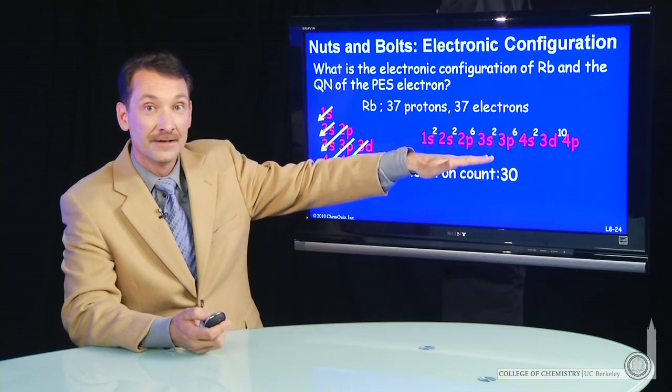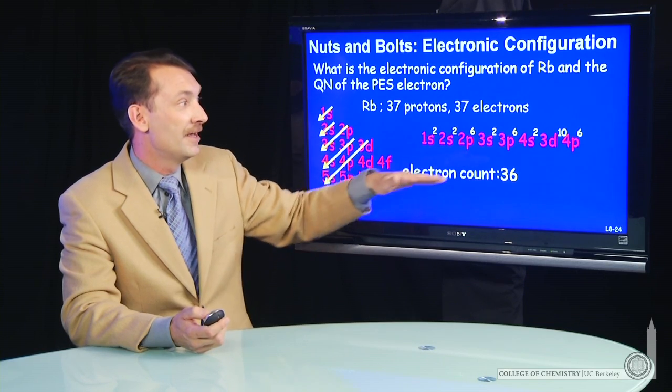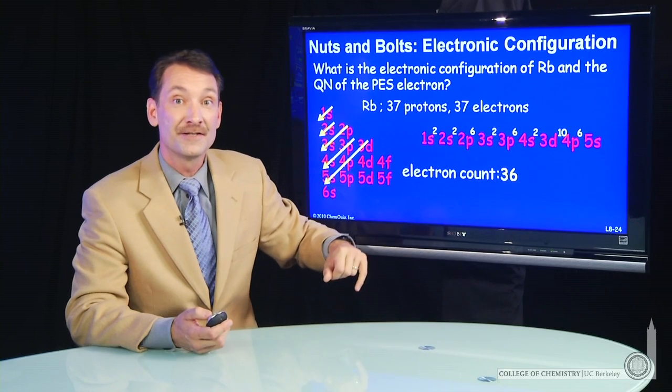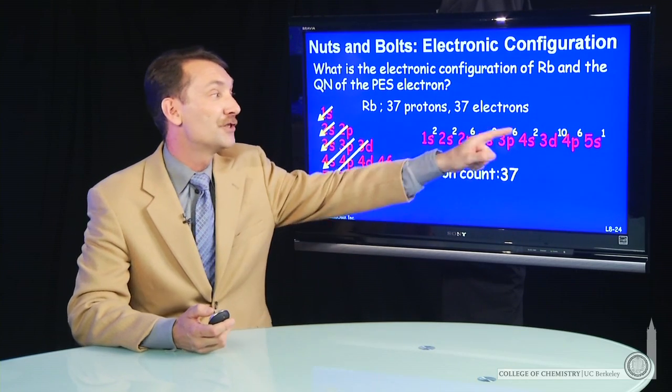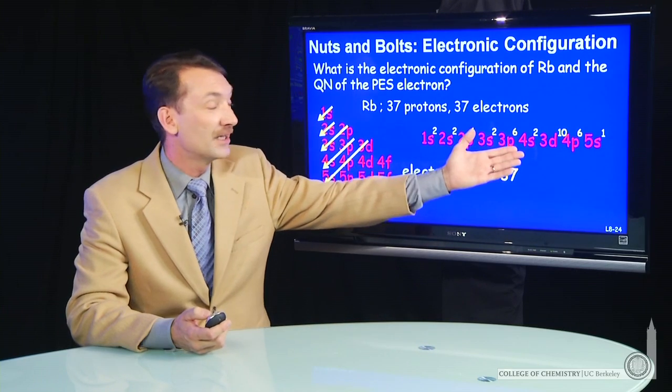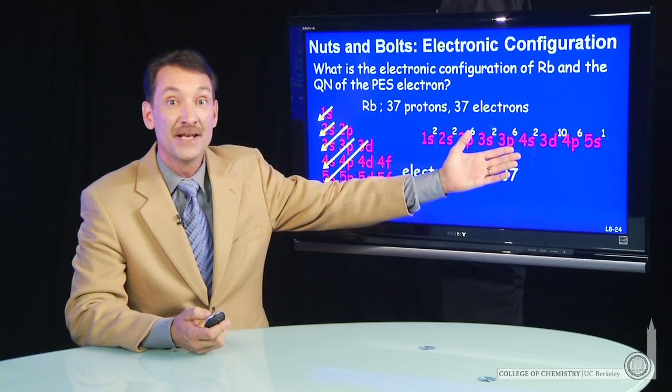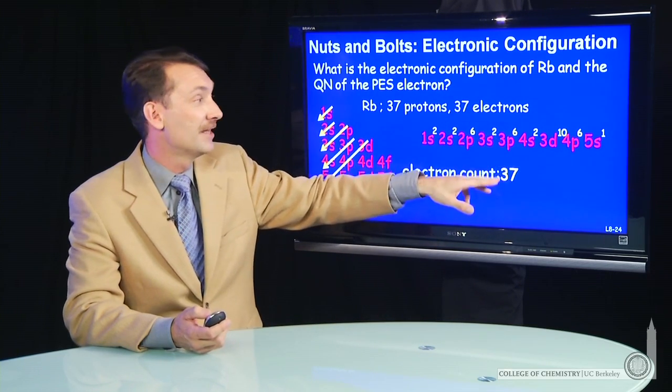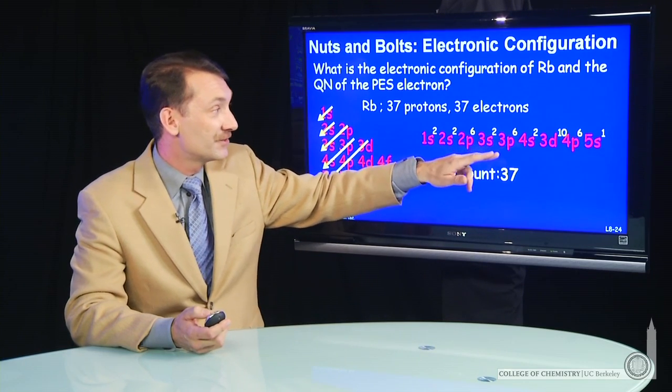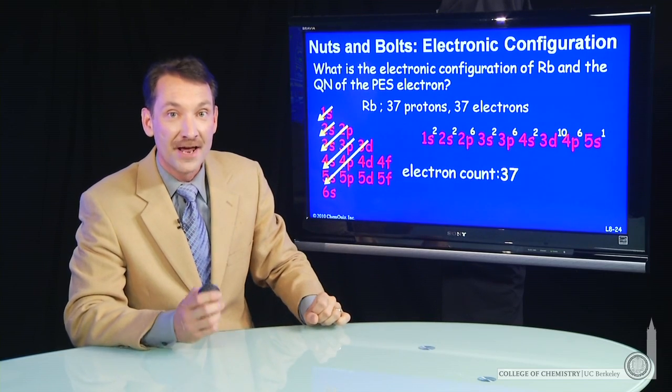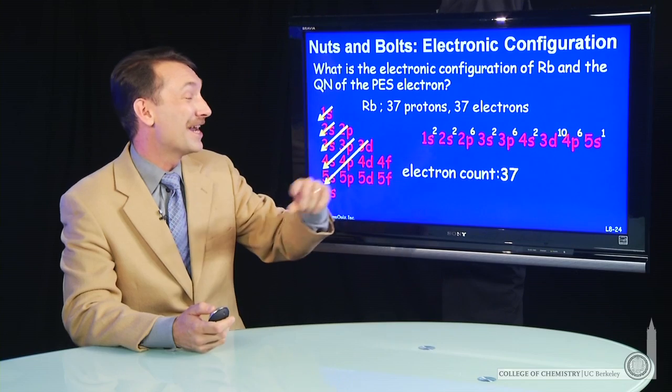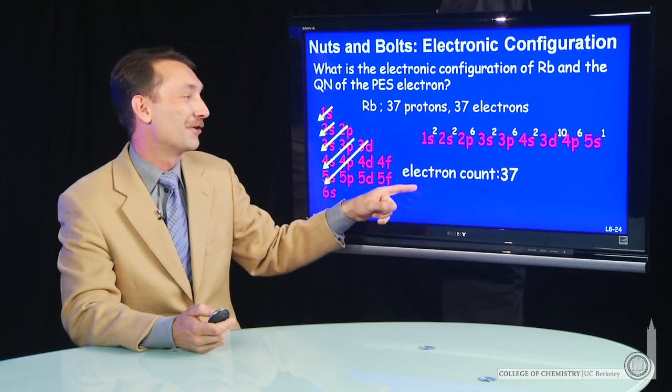Then the 4p accommodates six electrons. Then the 5s can accommodate two, but we're already up to 36. All we need is 37, so we'll put one electron and come to the full electron configuration of rubidium in its neutral ground state of 1s2, 2s2, 2p6, 3s2, 3p6, 4s2, 3d10, 4p6, 5s1. Quite a mouthful of electronic configuration.